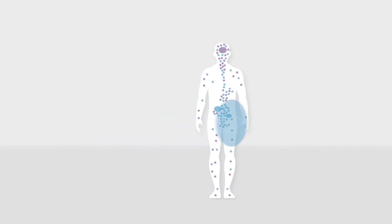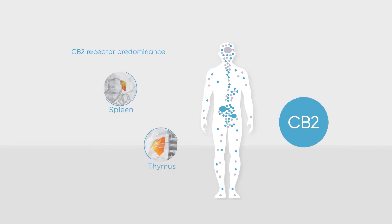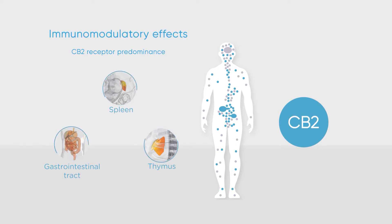The cannabinoid receptor subtype CB2 occurs predominantly in the immune system and gastrointestinal tract. CB2 activation inhibits inflammatory cytokine production, thereby having immunomodulatory effects.